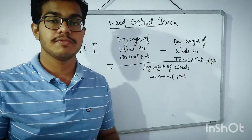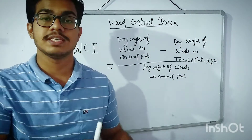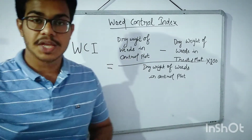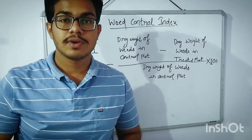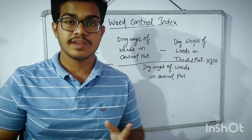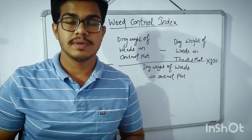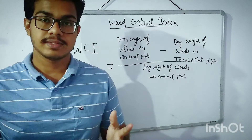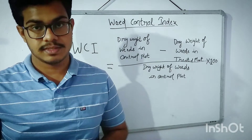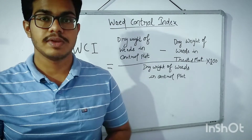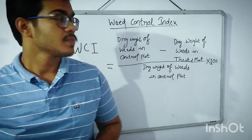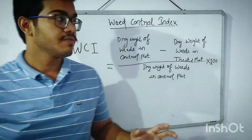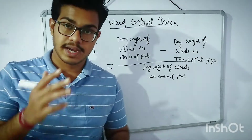We multiply by 100 because it gives the percentage difference between the dry weights of the weeds in both plots. The dry weight can be calculated by drying the weeds in a hot air oven, or in sunshine if the oven is not available.